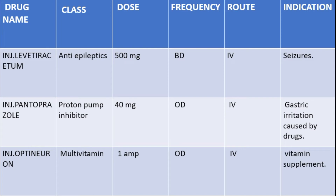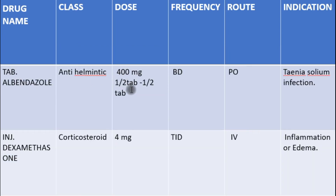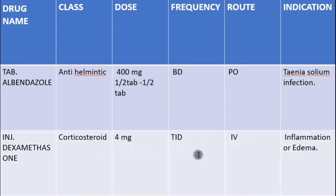Tablet Albendazole 400mg BD — it is an anthelmintic and the drug of choice for this disease. It is used to treat Taenia solium infection. Albendazole binds to the beta-tubulin protein of the parasite, restricts its movement, thereby leading to the death of the parasite. Injection Dexamethasone 4mg TID — it is a corticosteroid used to treat inflammation or edema caused by the larval stages of Taenia solium in the brain.